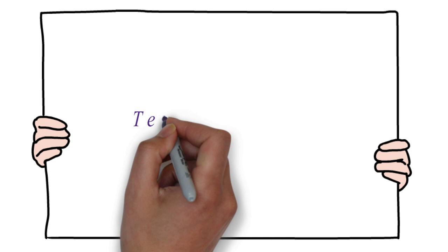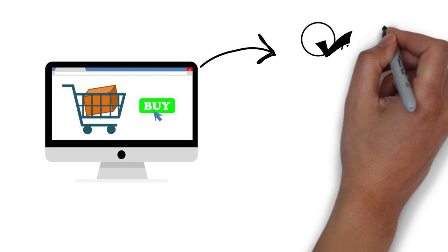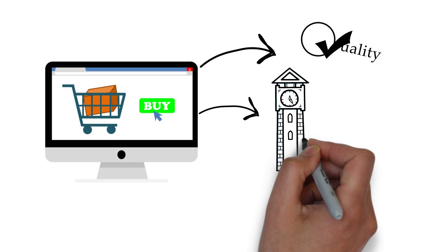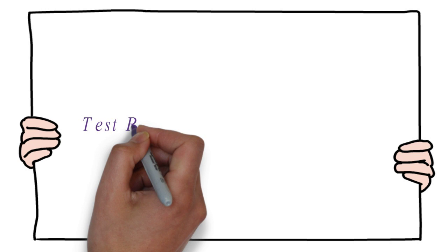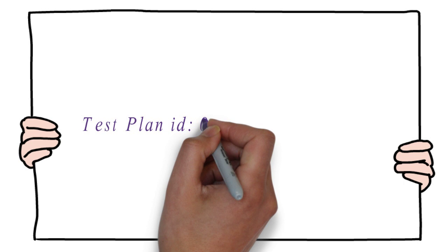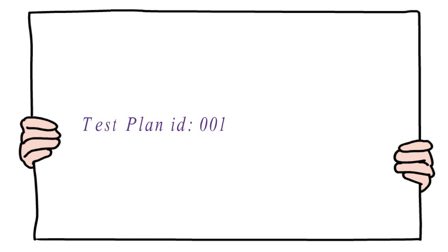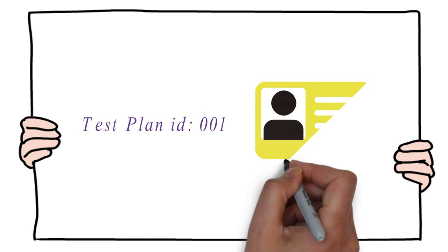I'll explain each component using a scenario to make it easy to understand. Consider the project is about testing an online shopping website. The objectives of the project are: ensure quality, deliver items on time, complete testing on time, and achieve customer satisfaction. When the test plan is prepared, it starts with a test plan ID. A test plan ID is required because in certain projects, a test plan would be prepared for each test level — such as component testing, integration testing, and system testing. In order to differentiate these, an identification called the test plan ID is created.